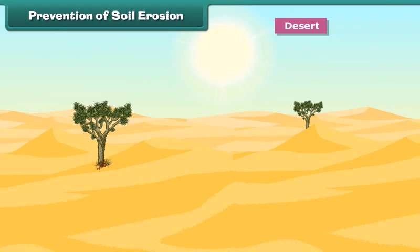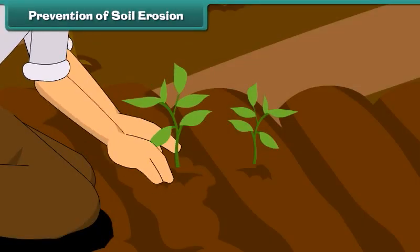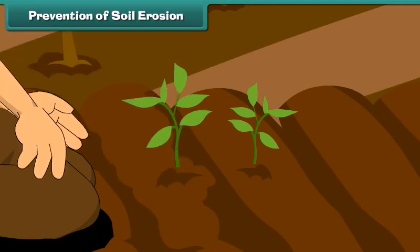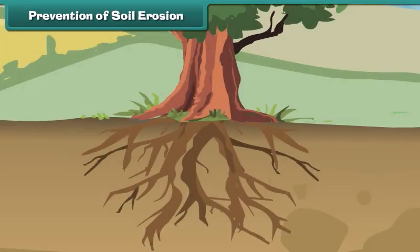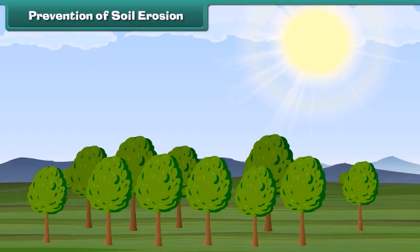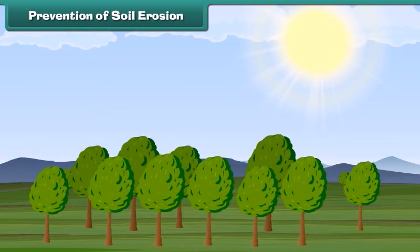There are many ways of preventing soil erosion. One of the most common ways is to grow more and more trees. The roots of trees hold the soil firmly and do not allow it to wash away easily. Trees planted across the wind direction also protect soil against high velocity winds.